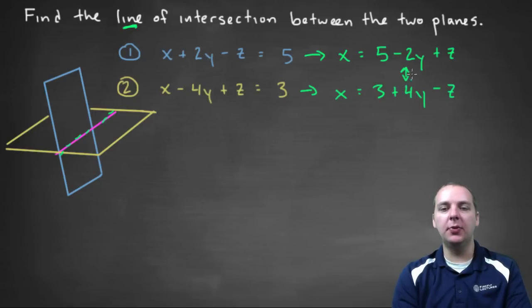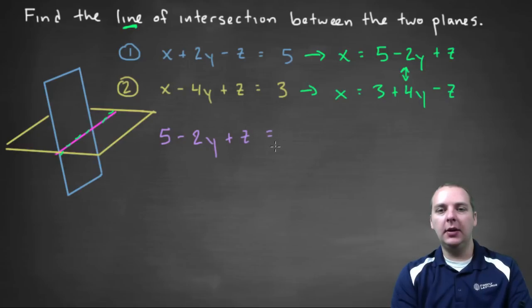So let's take these two right hand sides, set them equal to each other, and I'll kind of change colors as we go, so we don't get confused. We'll have five minus two y, plus z, equal to three, plus four y, minus z.